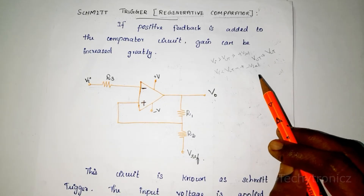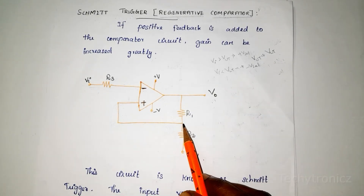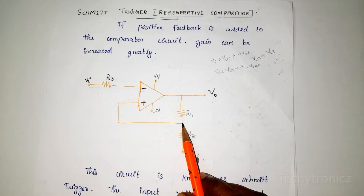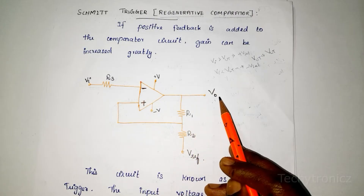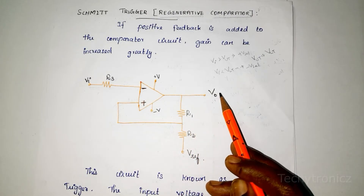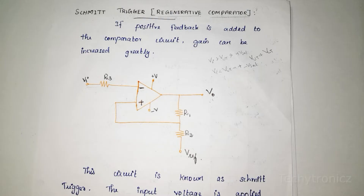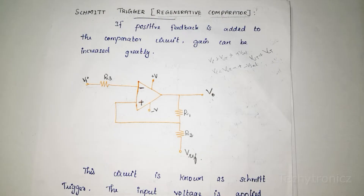The input voltage is compared with the feedback voltage. Every time it is compared with the feedback voltage; when it exceeds some voltage level, it triggers the output voltage. So it is called regenerative comparator. The difference between comparator and Schmitt Trigger is: comparator means we are not adding positive feedback to the circuit, whereas in Schmitt Trigger we are giving positive feedback.